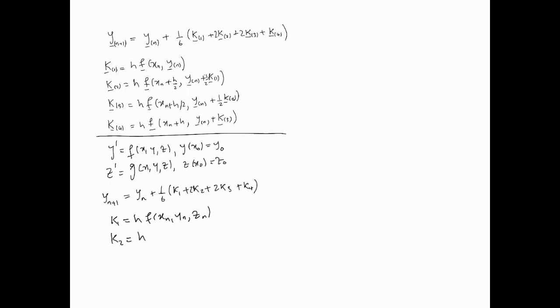And k2 is going to be h f(x_n + h, y_n + k1, z_n + l1). Keep in mind, the z and l go together, and y and k go together. And here you'll have l2, similarly, is g this time, because that's the right-hand side of z prime. So it's g(x_n + h, y_n + k1, z_n + l1).